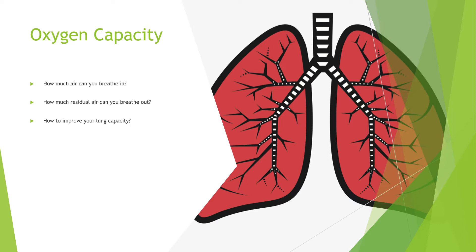Many musicians do exercises that help with lung capacity. They breathe in as much as they can, then take little sips at a time and try to improve how much capacity they have. Athletes can do the same thing. Generally speaking, harder workouts and VO2max workouts help with oxygen capacity, help with lung capacity, just in a natural sense. This is one of the components for VO2max.